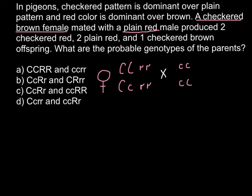Red color can be produced by two genotypes. One possible genotype is capital R capital R. Another is capital R small r. These are the two possible genotypes for the male.